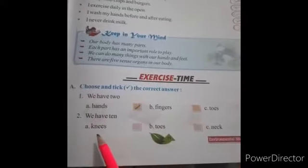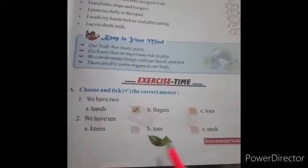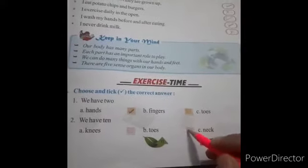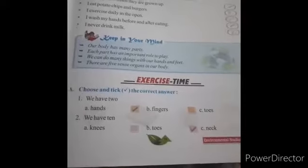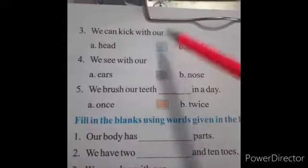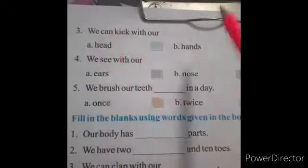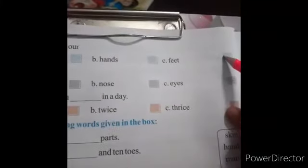We have ten — choices: knees or neck. Hamare pairon ke anguthe ten hote hain. Next: we can kick with our — choices: head, hand, or feet. Feet is the correct option. Hum tick karenge.